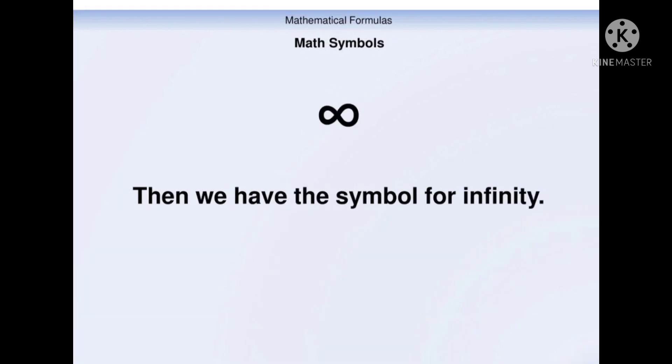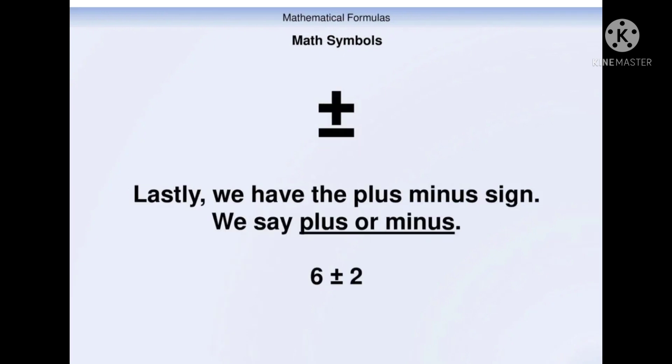The next symbol is the degree symbol. We say degrees. 90 degrees, 36 degrees. Then we have the symbol for infinity. Lastly we have the plus minus sign. We say plus or minus. 6 ± 2.